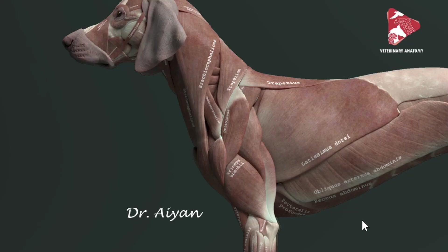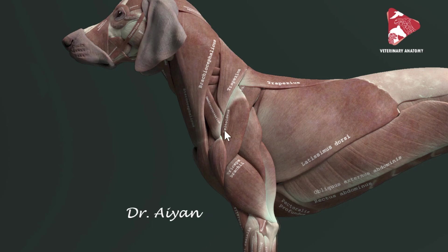Hello everyone and welcome back to another anatomy tutorial. This is Dr. Ayan from the veterinary anatomy channel. A lot of students asked me if I can show some anatomical videos on animal models, so it will be easier for them to look for these structures on real animal cadavers. Today in this video we will talk about some of the shoulder girdle muscles — the muscles which are important to connect the forelimb to the trunk, to the neck, and some of them to the head. I will also show you some tricks for finding the origin and insertion of these muscles.